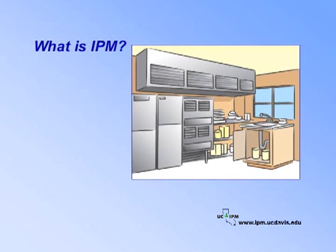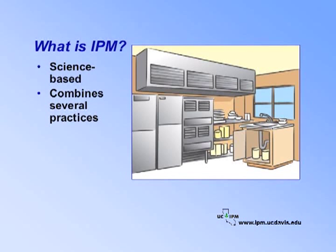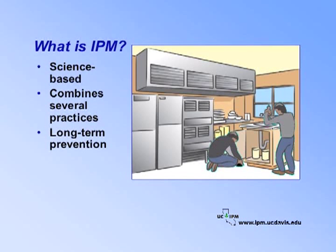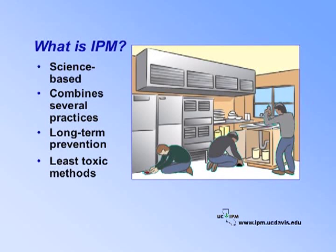You may never be able to eliminate all cockroaches living around school grounds, but you can prevent major problems with regular inspection and by eliminating food, water, and shelter. IPM uses environmentally sound yet effective science-based practices to keep pests from annoying you, causing economic or health-related damage, or damaging plants. IPM programs usually combine several pest management practices for long-term prevention and management of pest problems without harming you, the students, or the environment. Spray should not be necessary to manage cockroaches. Least toxic methods, such as baits, are preferred. IPM programs require a good detection system using regular inspection and sticky traps.